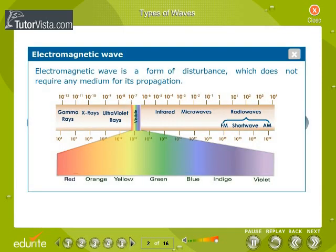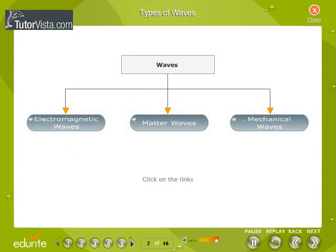Electromagnetic wave is a form of disturbance which does not require any medium for its propagation. For example, light waves.